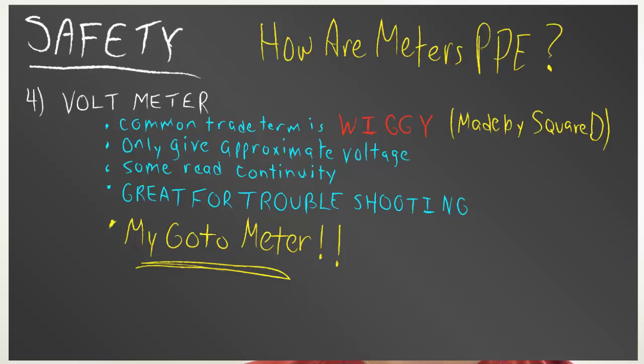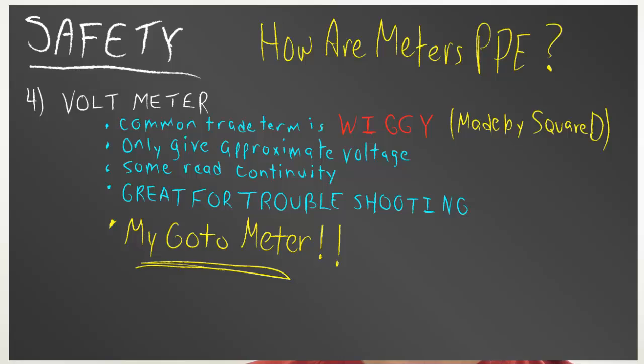What a voltmeter does is give you an approximate voltage and not an exact voltage. A lot of the voltmeters today read continuity, and that's why they're good for troubleshooting, because most of the time those are the only two things that you ever really need. These are great meters to keep in your pouch.